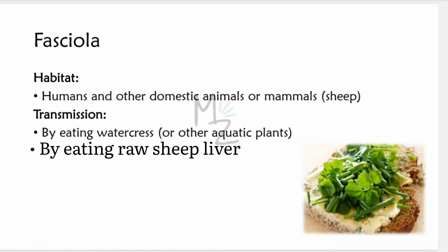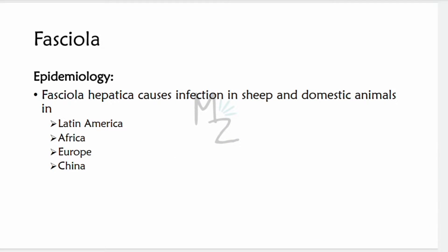Habitat: humans and other domestic animals or mammals, for example sheep. Transmission occurs by eating watercress or other aquatic plants, or by eating raw sheep liver. Epidemiology: Fasciola hepatica causes infection in sheep and domestic animals in Latin America, Africa, Europe, and China.